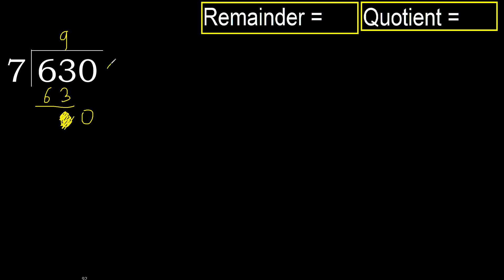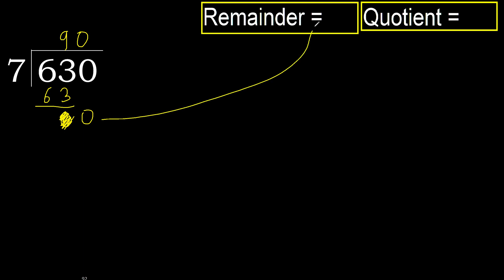There is no next number, therefore finish it — complete. Always complete with 0. Complete because here we finish with this number. 630 divided by 7 is 90.